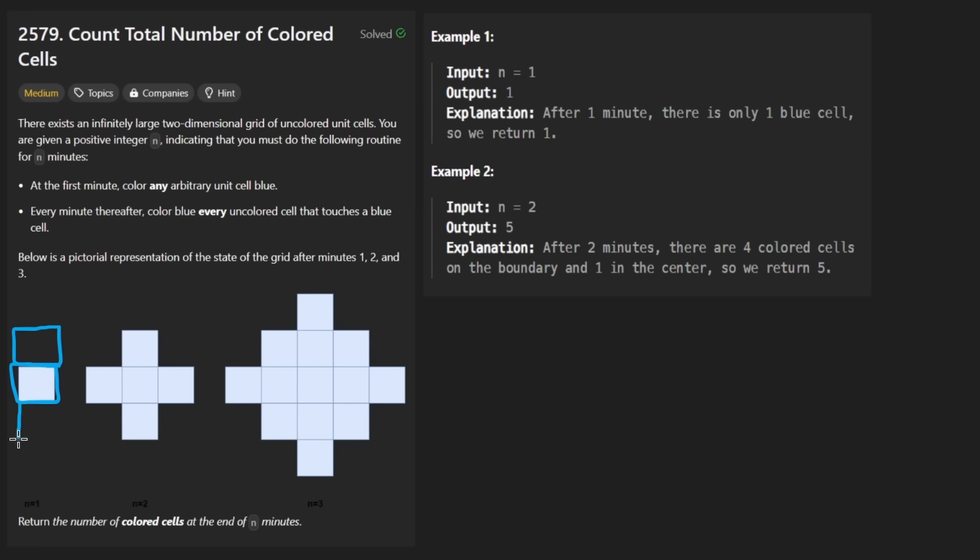So we add one square to the top, to the bottom, to the right, and to the left. And you see after we've done that, this is the new shape that we have. So this is n equals two.